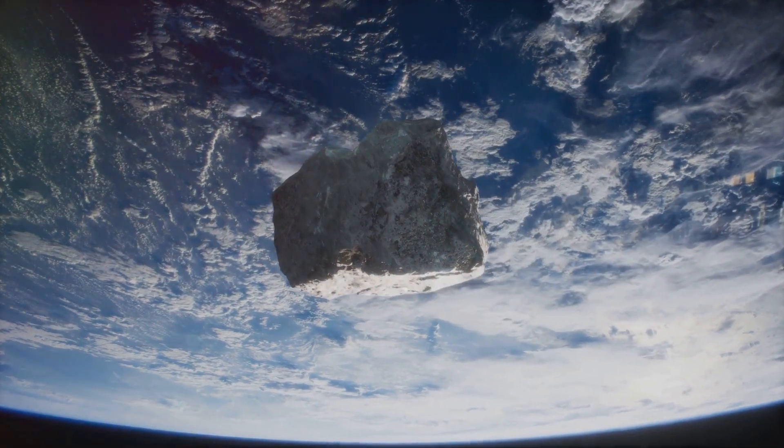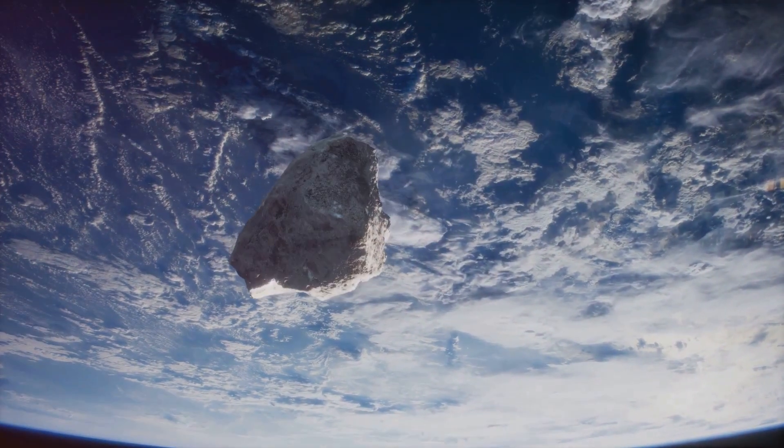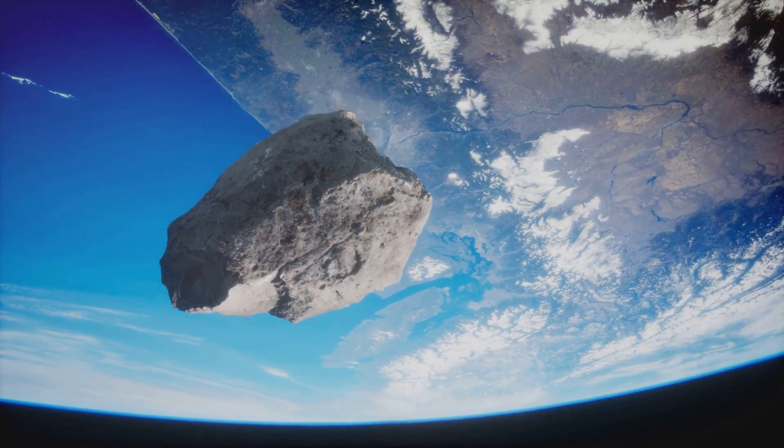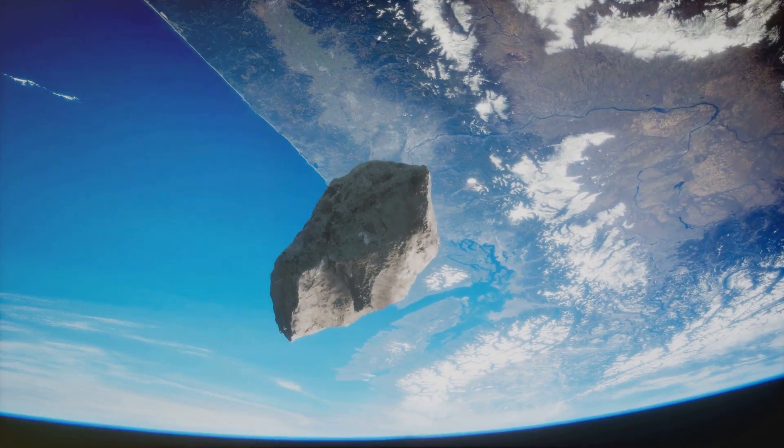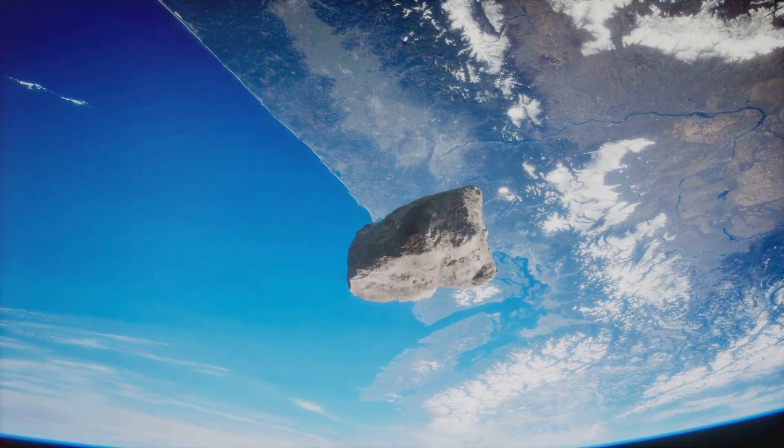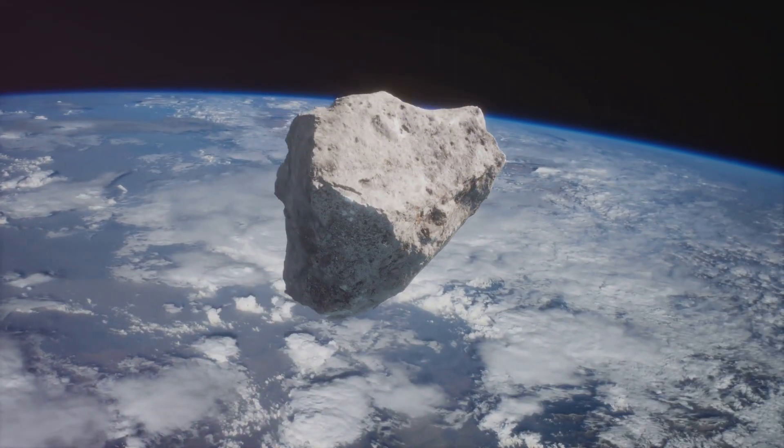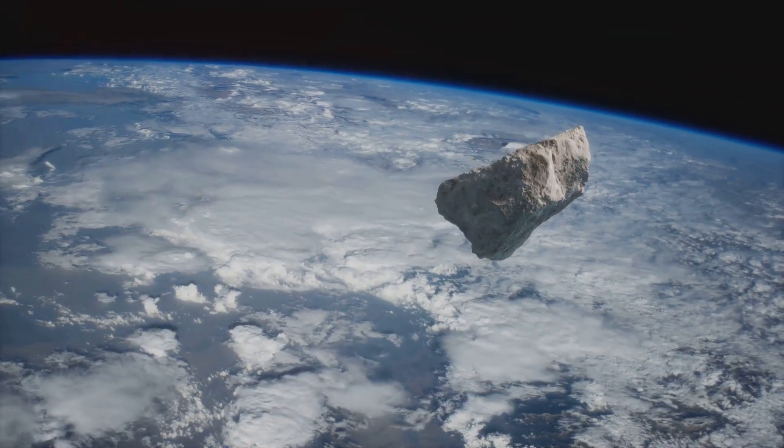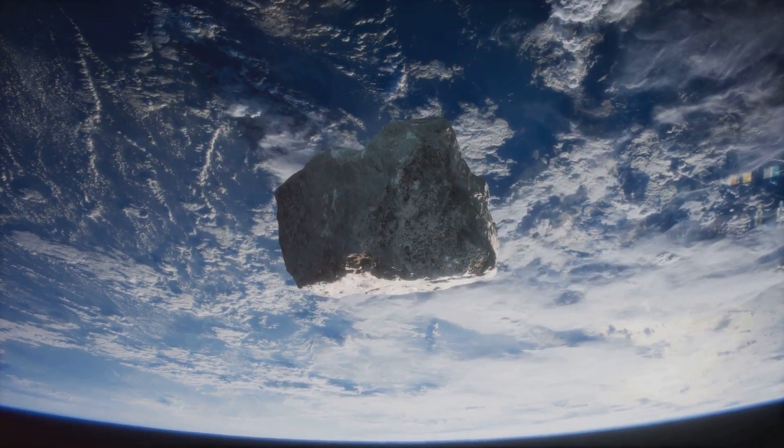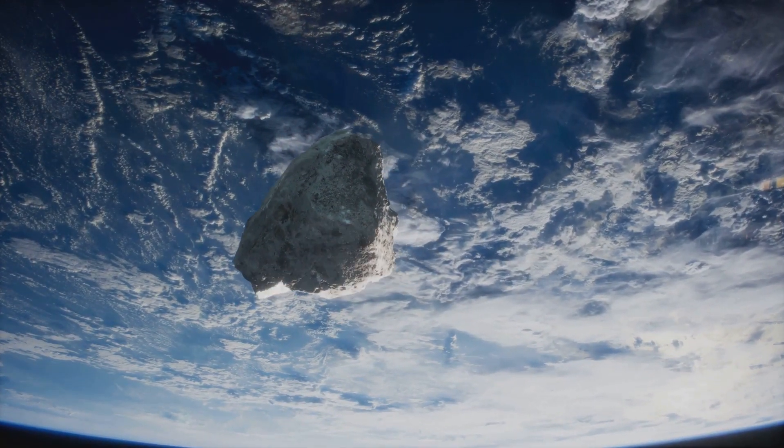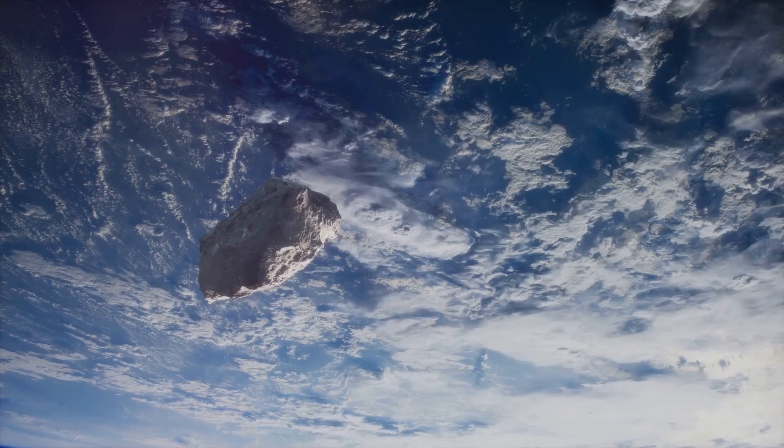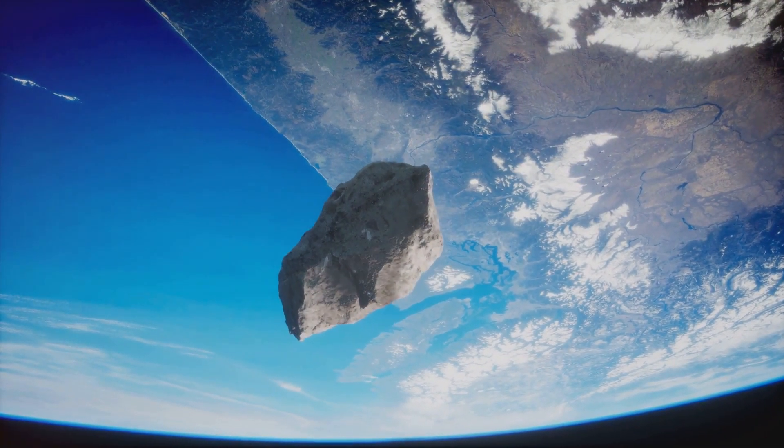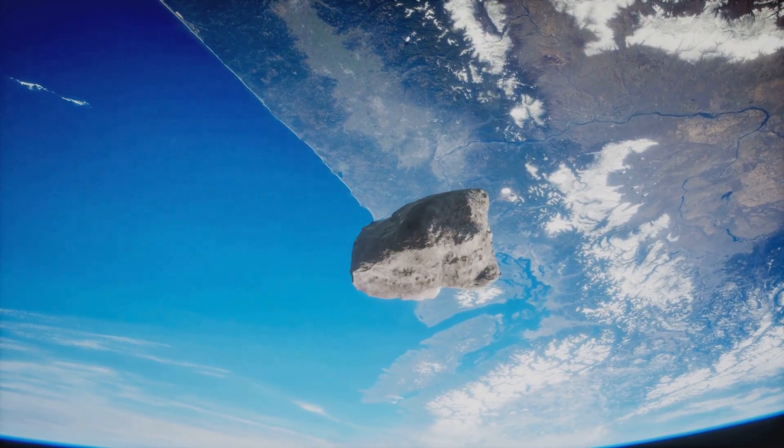Scientists predict that Apophis will pass within 19,000 miles of our planet. This is an incredibly close shave in astronomical terms, closer than some of our own satellites, but despite the close proximity, experts assure us that the chance of an impact is exceedingly small. But what if Apophis were to collide with Earth? Well, our best defense is knowledge. By studying asteroids like Apophis, we can gather critical data that could help us prepare for potential asteroid impacts in the future. We've even started to develop potential deflection strategies like the DART mission led by NASA, which aims to change the course of an asteroid by crashing a spacecraft into it.